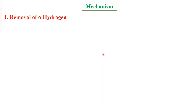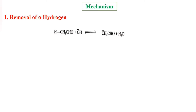Now we will see the mechanism — there are four steps. The first step is removal of alpha hydrogen. The aliphatic aldehyde, acetaldehyde, reacts with a hydroxide ion from the 10% alkali. The alpha hydrogen reacts with the hydroxide ion and is removed as water, giving a CH₂ carbanion with a negative charge.